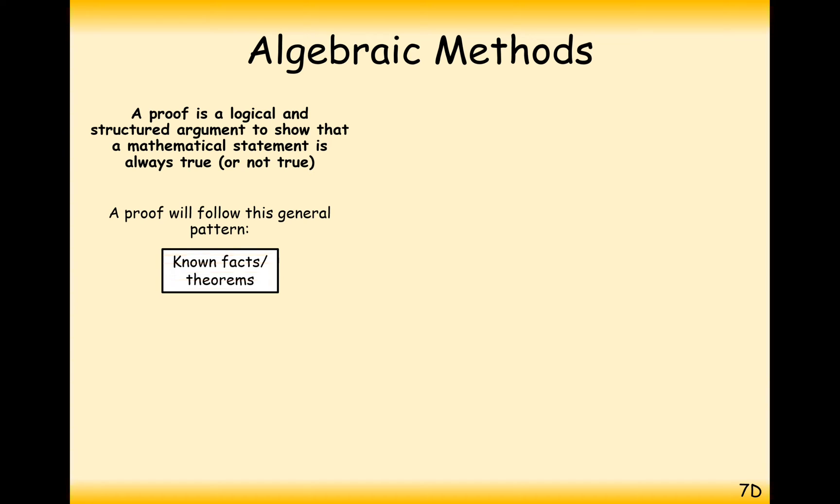A proof will follow roughly the same pattern in every different circumstance. What we'll start with is some known facts and theorems, and then we'll move on to doing some mathematical manipulation with those known facts and theorems, so we clearly show our logic the whole way through. And then we get a statement of proof right at the end, where we've shown that one thing equals another, or we conclude that from this information, where we've rearranged our known facts, it must therefore imply what we're trying to prove.